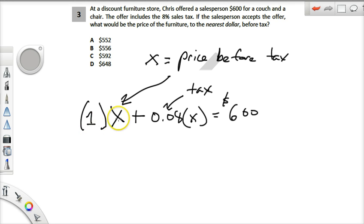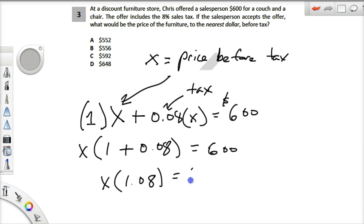1X is the same as X. We have X multiplied by 1 and X multiplied by 0.08. You could do your distributive property: this is the same as X times 1 plus X times 0.08. You could just add up what's in parentheses and simplify this to X times 1.08 equals $600.